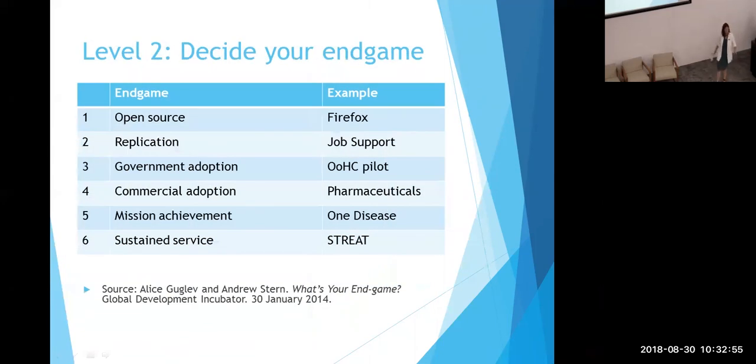That's level one stuff. Let's take it up to level two. There's a great article by Google Evan Stern called What's Your End Game, Stanford Social Innovation Review. They said you can have six different end games. One, open source like Firefox, freely available to everyone. Replication, like Job Support that does supported employment for young people with disabilities. They get 88% of their young people employed six months down the track. Just replicating what they do.